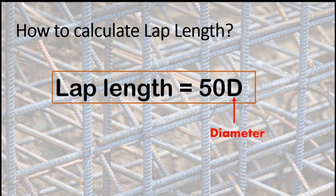If we have different bar diameters, small diameter times 50 is considered as lap length.